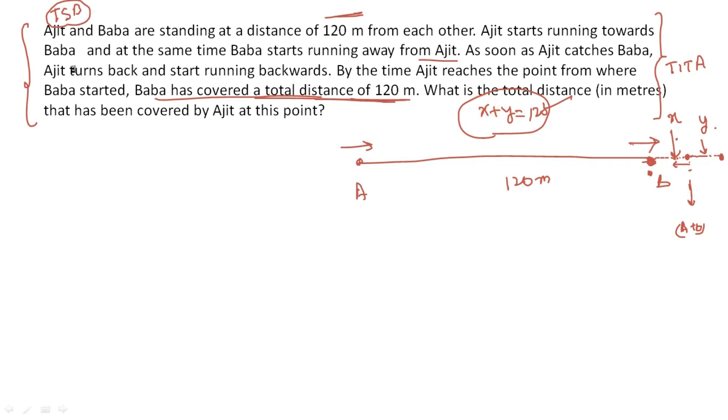Now, nothing is given about speed. If you read the question in short, nothing is given about speed. So let's take the ratio of Ajit and Baba's speed as a is to b. I know that in the same time, Ajit covers 120 plus x to catch Baba, and Baba covers only x. So if we take the speed ratio, since time is constant, speed is directly proportional to distance. So distance covered by Ajit is 120 plus x and Baba covers only x.